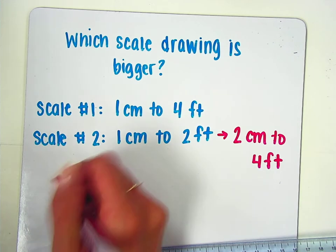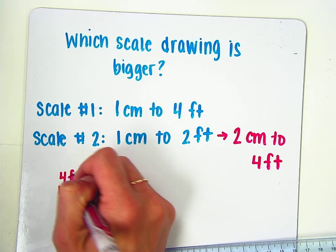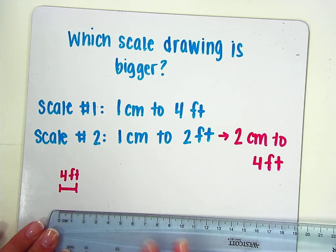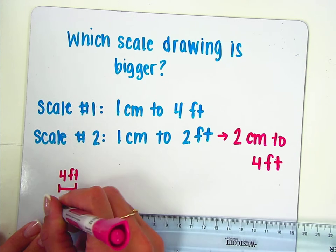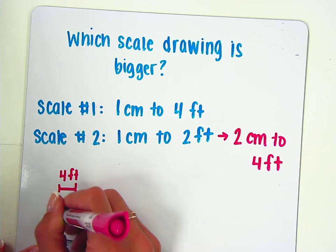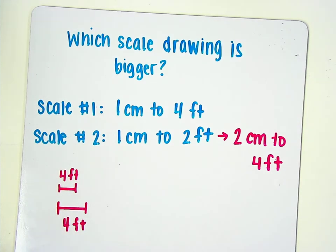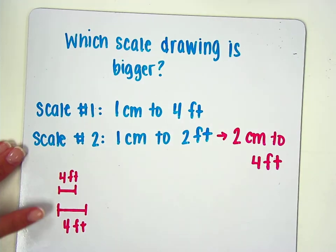In the first scale drawing this is representing 4 feet. In the second scale drawing we need 2 of these centimeters to also represent 4 feet. So we can tell again that that 2nd scale drawing would have to be bigger.